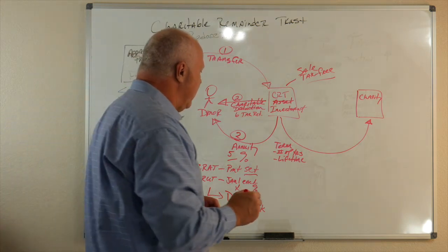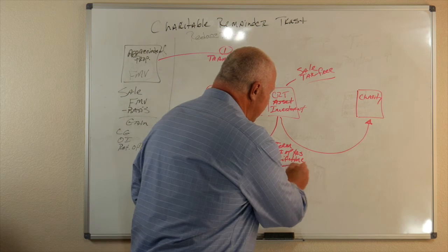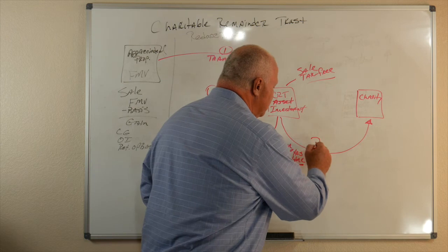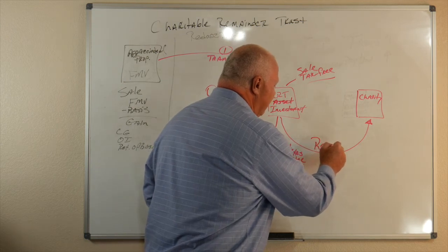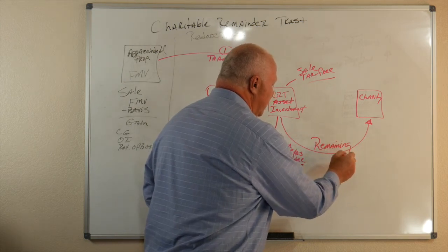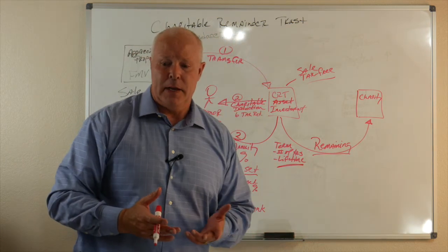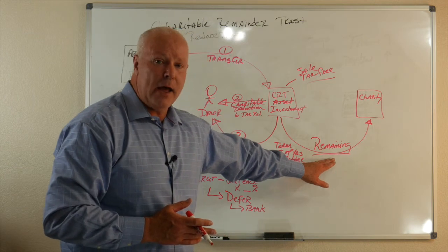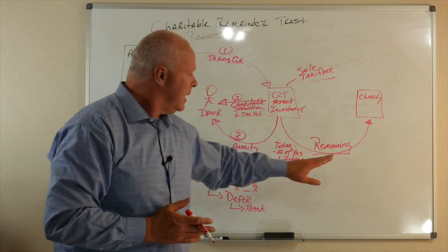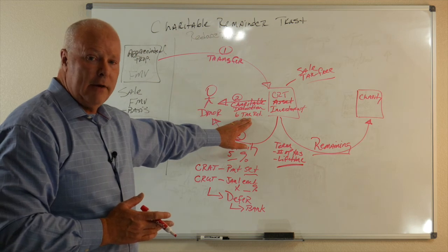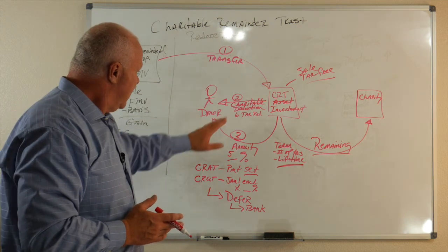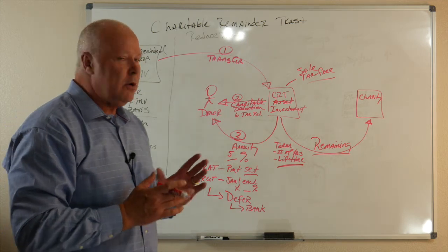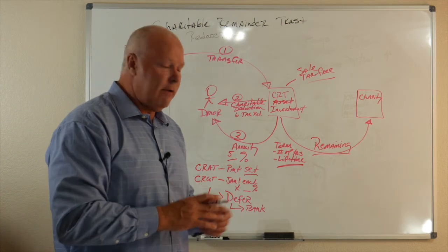Now, the final part here is, at the end of the term, whether that's a term of years, lifetime, whatever, whatever's remaining, whatever is left, whatever that remaining amount is, goes to charity. And, you know, now the charity gets a big benefit, our client's taken a lot of income, they got a tax deduction in the process, so it really becomes a win-win for both the charity and for our client.